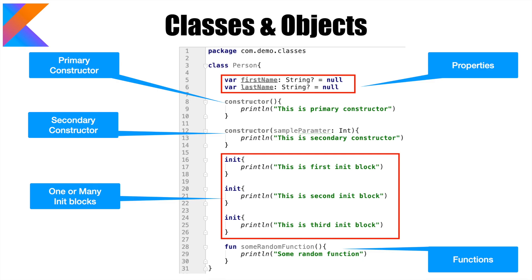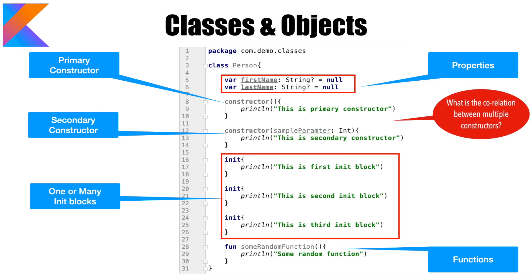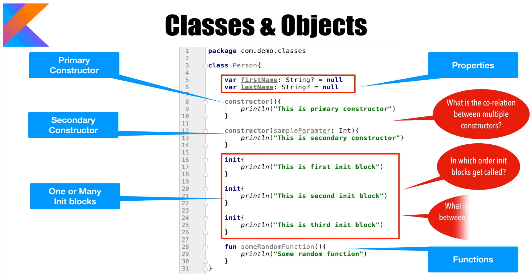When you look at these init blocks and constructors, I'm sure you are getting some questions. The question would be: what is the correlation between multiple constructors — in which order they get invoked and how they get invoked? And then if there are multiple init blocks, in which order do the init blocks get called? What is the correlation between the init blocks and the constructors? It is very important that you have a proper understanding of how these things work before you actually get down to writing a class to implement any functionality. So the best way to understand this is to get into a demo.